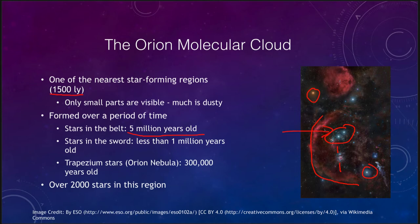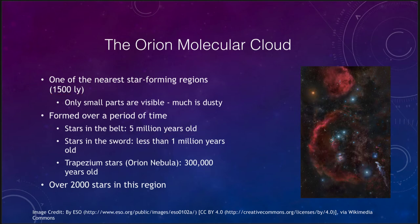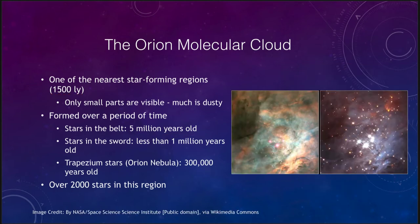The stars in the sword going down from the belt are about a million years old. The trapezium stars in the Orion Nebula itself are only a few hundred thousand years old. We can look at those trapezium stars in more detail — here we see them in an image. This is visible light, and this is in the infrared — the same image — and you can see those stars buried within all the dust.